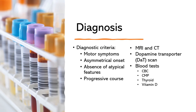Blood tests are not commonly used as primary diagnostic tools for Parkinson's disease, as there are no specific blood markers that can definitively confirm the condition. However, blood tests may be ordered to rule out other potential causes or to assess certain factors relevant to managing the condition. A complete blood count, or CBC, may be ordered to rule out other potential causes of similar symptoms such as anemia or infection. A comprehensive metabolic panel, or CMP, is used to assess the overall health and function of the body, which may be relevant in management of the disease. Certain medications used to manage Parkinson's disease might require monitoring of liver or kidney function.